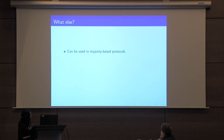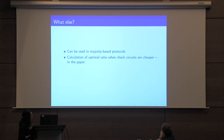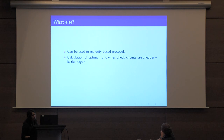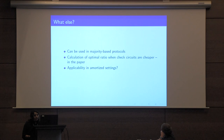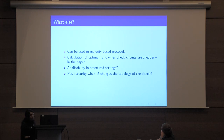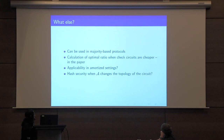Nevertheless, the free hash construction can be used in protocols based on majority output. Moreover, when using a collision-resistant hash in cut-and-choose protocols, the cost of a checked circuit is cheaper than an evaluation circuit in terms of communication, resulting in an optimal ratio of check and evaluation circuits different from half — we show this calculation in the paper for a dual execution protocol. It remains to be seen whether our definition of hash security applies to protocols in amortized settings, and whether our constructions can be extended when the adversary can also change the topology of the circuit.